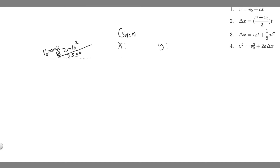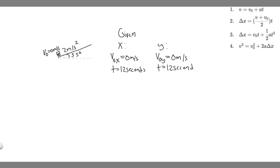Starting with x: the initial velocity in the x, v₀ₓ, is 0 meters per second. Since the car starts from rest, it's 0 in both x and y, so v₀ᵧ is also 0 meters per second. The time for both directions is going to be 12 seconds, because time doesn't have an x or y component — it's the same for both directions.